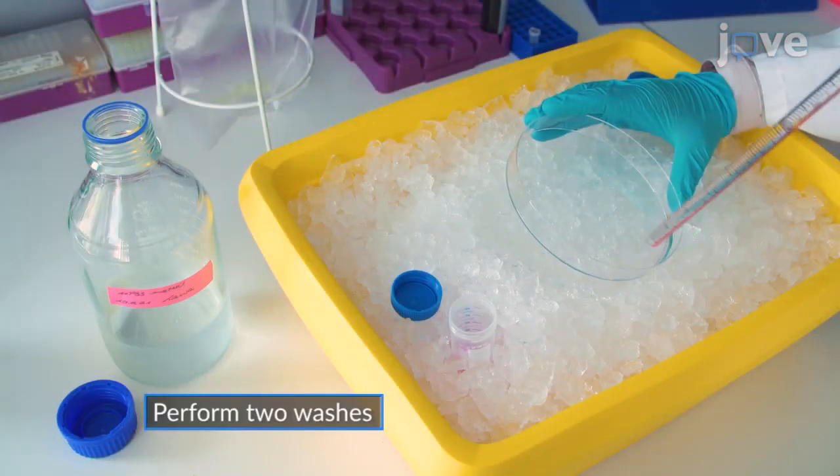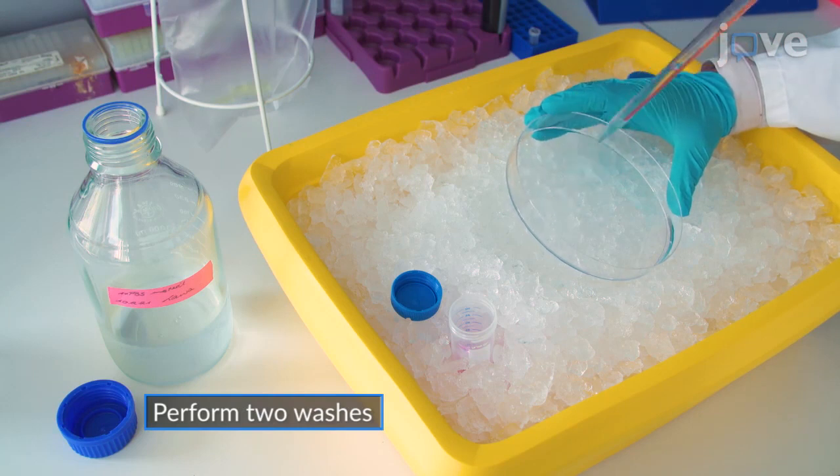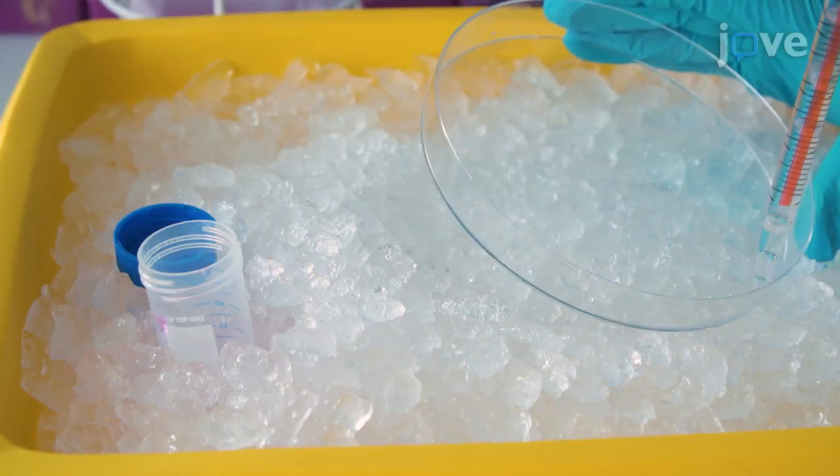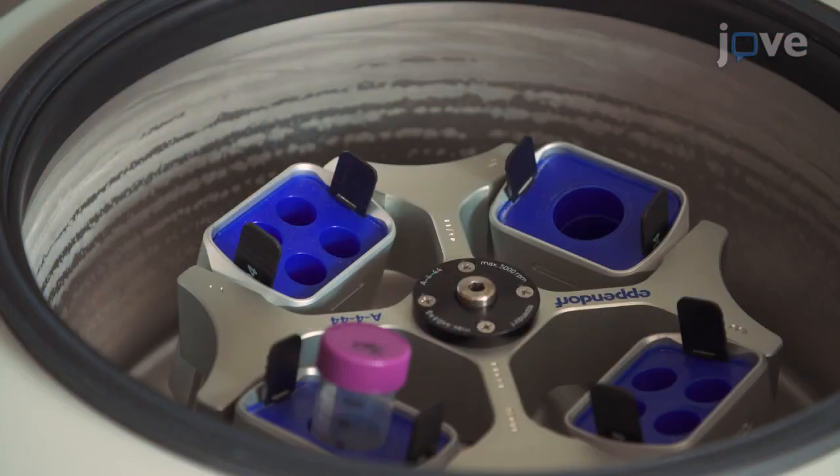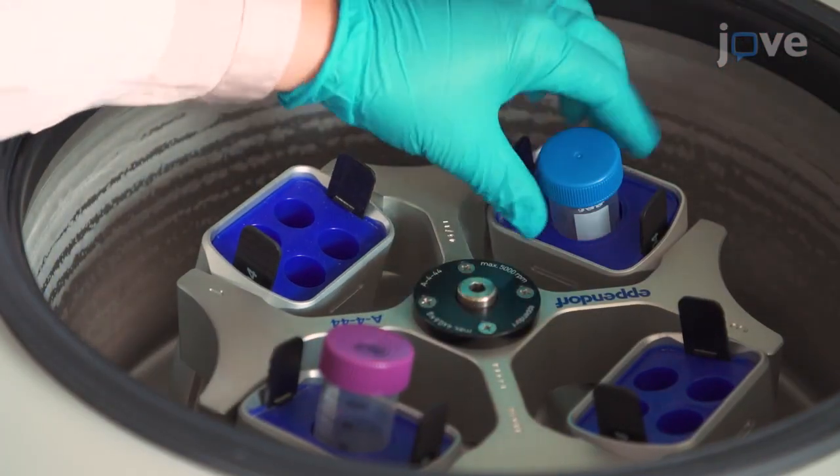Wash the cell dish with 10 mL of cold PBS twice and add the wash solution into the same 50 mL tube. Then centrifuge the cell suspension at 500 times G for 5 minutes at 4 degrees Celsius.